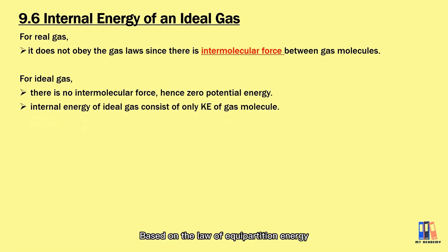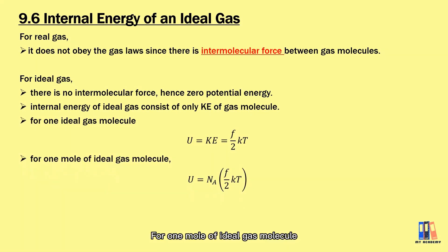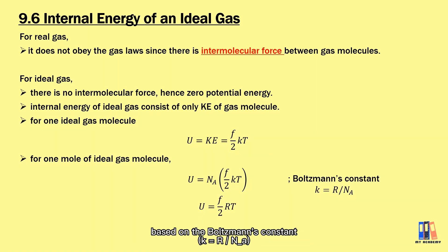Based on the law of equipartition of energy, we derive the internal energy of the ideal gas. Each gas molecule has the internal energy equal to the degree of freedom multiplied 1 over 2 kT as stated in the law. For one mode of ideal gas molecule, we can derive the internal energy as F over 2 RT based on the Boltzmann constant.